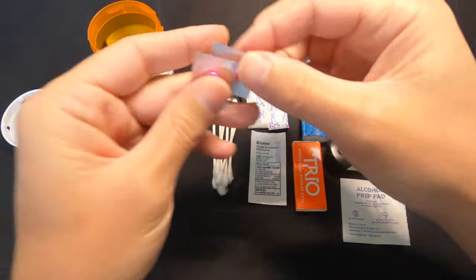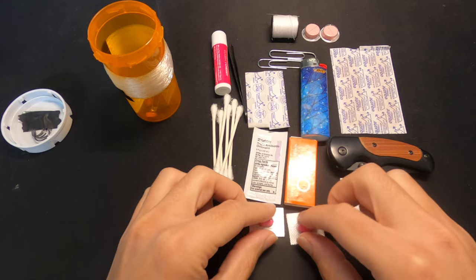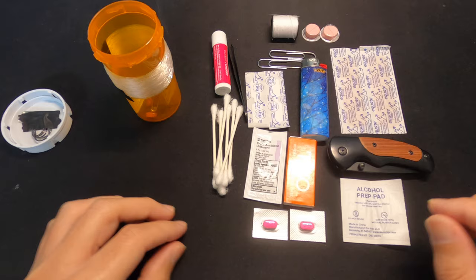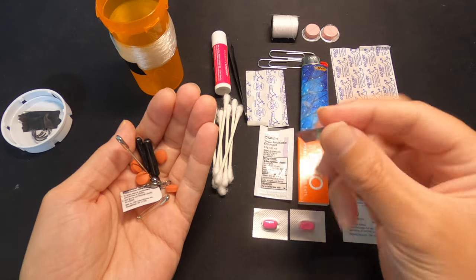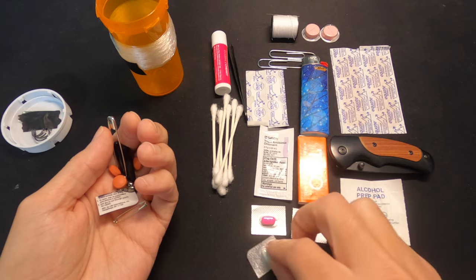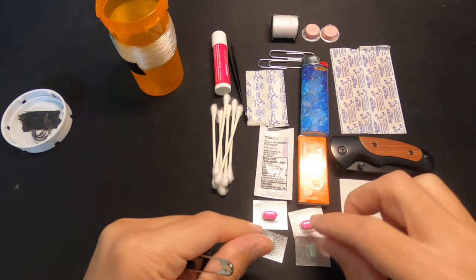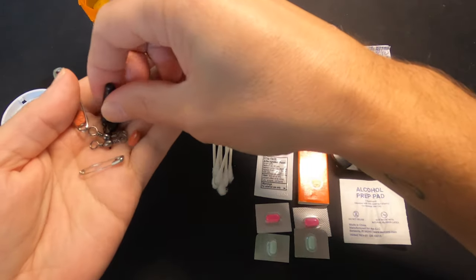Some Benadryl, just in case you have an allergic reaction. You get stung by a bee, you're allergic to the pollen in the air, whatever it may be. Some Benadryl might be good to have, especially if you have allergy problems. Some anti-diarrhea medication. Not the most glamorous thing to have. But, hey, you drink some bad water or eat some bad food, it's no fun being sick outdoors. So that should help you out.